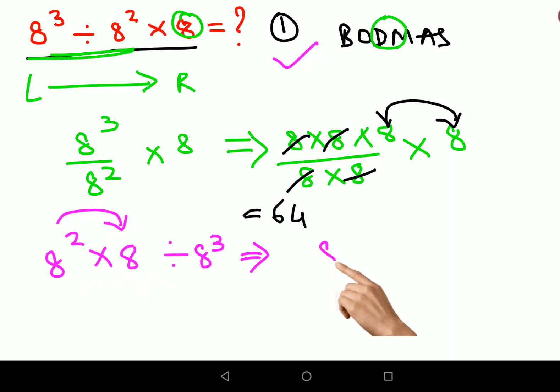So 8² × 8 gets you 8³ ÷ 8³. The answer is 1. I hope you have understood the difference between the two and in which scenario the answer is 1 and in which scenario the answer is 64.